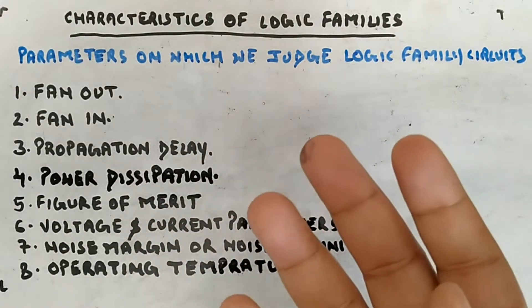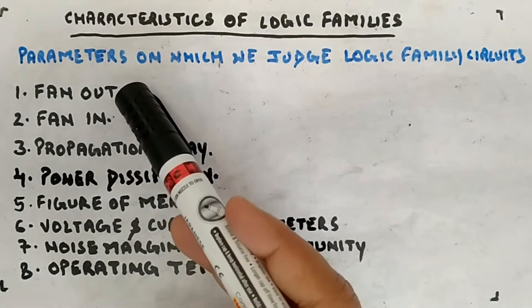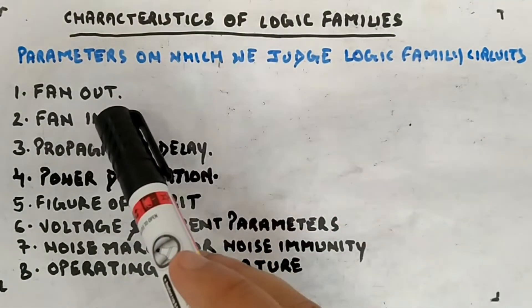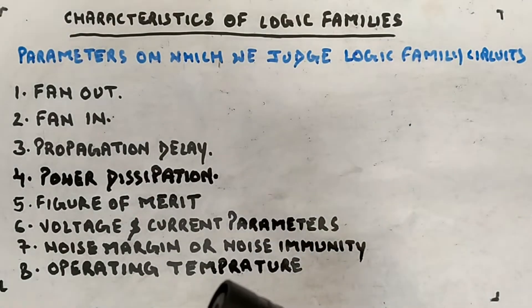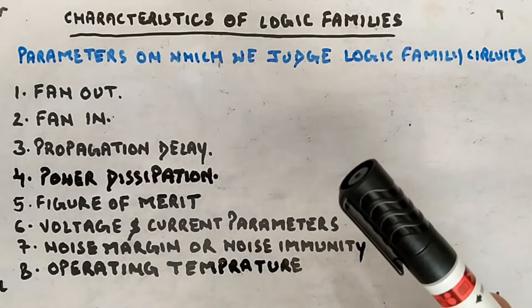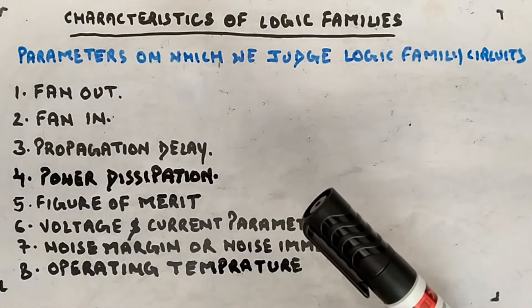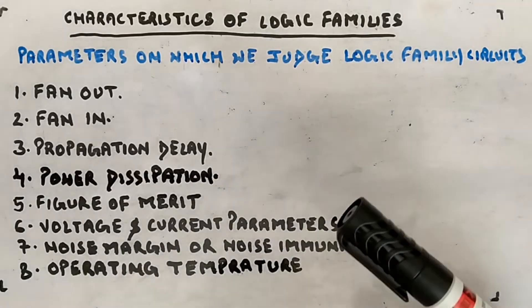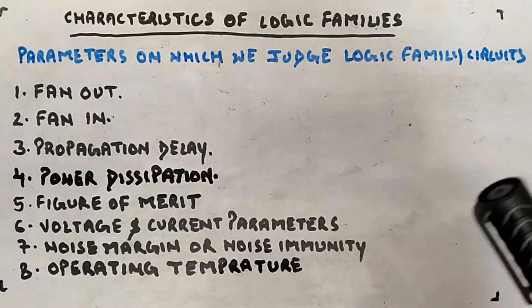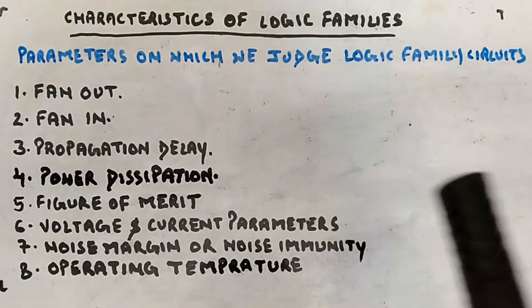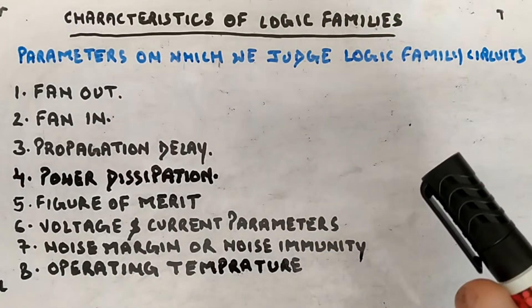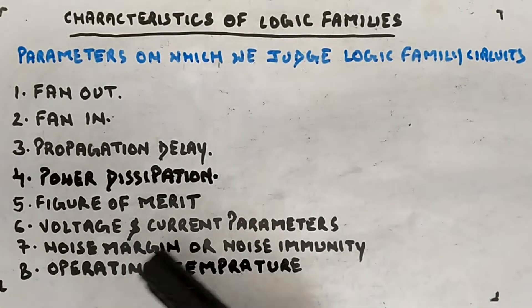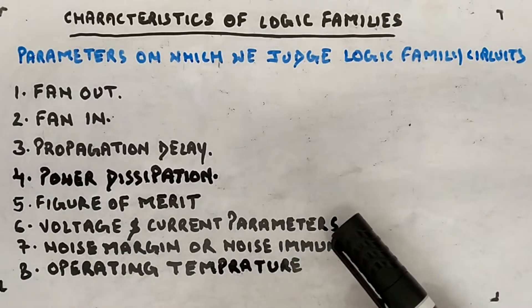There is fan out — how much fan out a particular circuit has — and fan in — how much fan in is required. Then there is propagation delay, power dissipation, figure of merit, and voltage and current parameters: output high current, output low current, input high current, input low current, output high voltage, output low voltage.